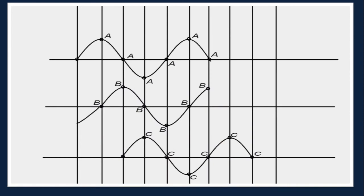Let us study the movement of three neighboring molecules A, B, and C when a disturbance is created. Particle A is first to be disturbed. It passes the disturbance to B and B passes it on to C and so on. Let us see what happens.